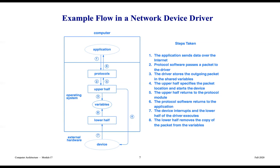Continuing the network device flow: the upper half specifies the packet location and starts the device, then returns to the protocol module. The protocol software returns to the application. The device then interrupts, and the lower half of the driver executes, removing the copy of the packet from the shared variable. We can see how things get started and then information percolates back up and out.